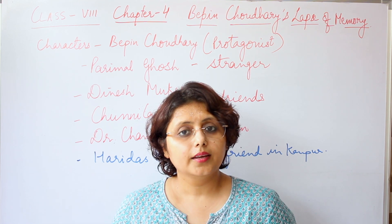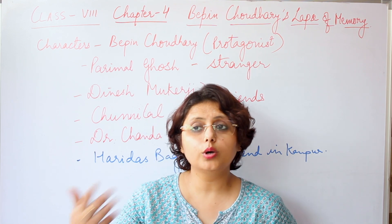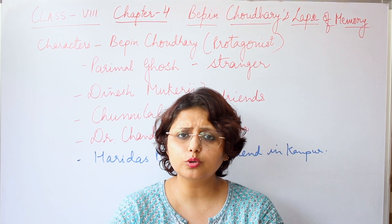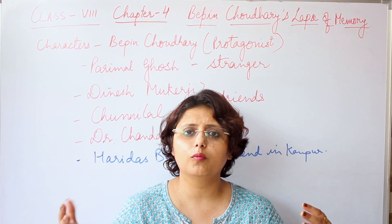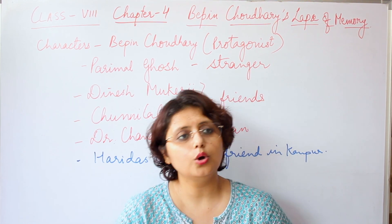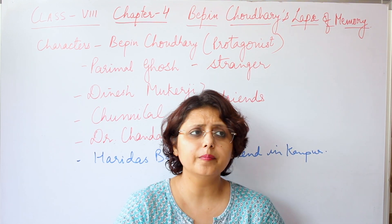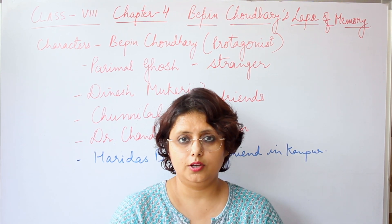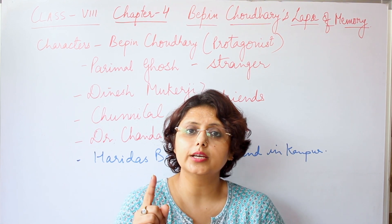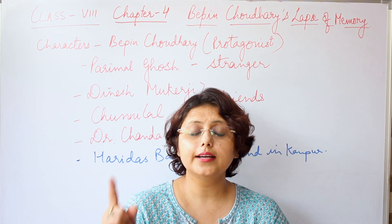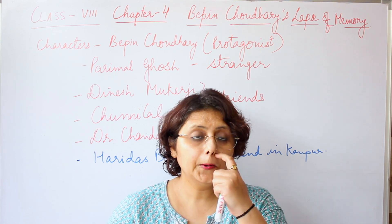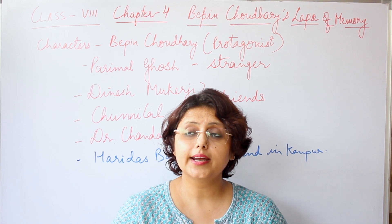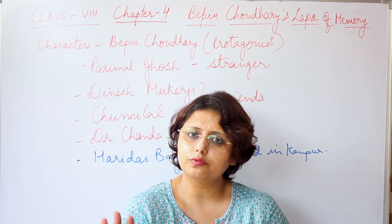Parimal Ghosh kept telling him more details, hoping he would remember — just as friends or parents help us recall forgotten events. He told Bipin that he didn't like staying in hotels, so he had stayed at his friend Dinesh Mukharji's sister's place in Ranchi. He also didn't like hotel food, so Dinesh Mukharji's cook prepared simple food for him.